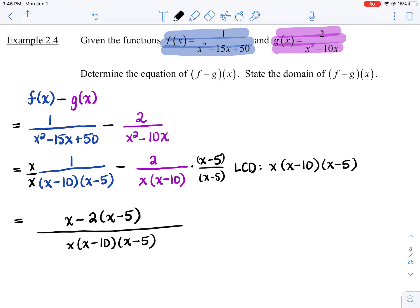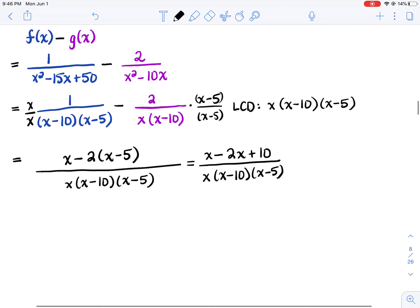All right, I'm going to expand the brackets in the numerator. So don't forget to expand out the negative as well. So it's going to be x minus 2x plus 10 all over the LCD, x times x minus 10 times x minus 5. Let's collect some like terms. We get negative x plus 10 all over x, x minus 10, x minus 5.